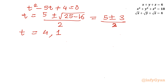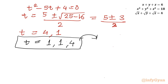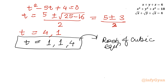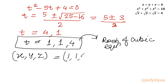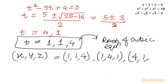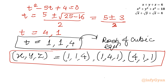So the final and overall solution of this cubic equation is t equals 1, 1, and 4. Since t represents the roots x, y, z, we have x, y, z equal to 1, 1, 4, or any permutation such as 1, 4, 1 or 4, 1, 1, because the original system is symmetrical. I hope this video is meaningful to you. Do not forget to like, share, and subscribe. Bye-bye friends, till next video. Good luck and take care of yourself.